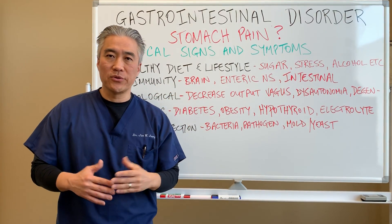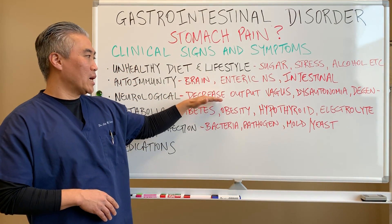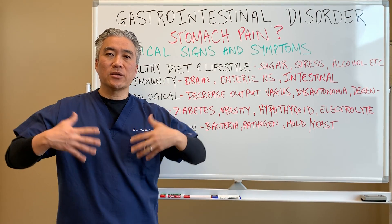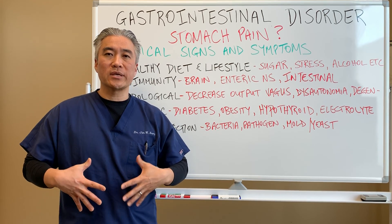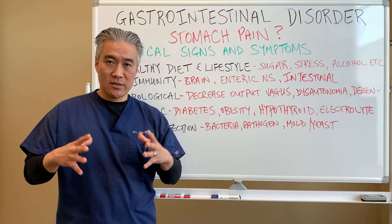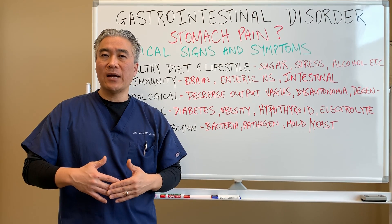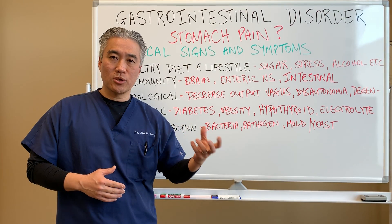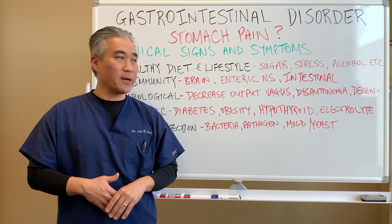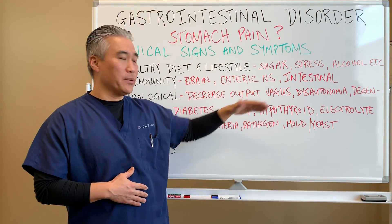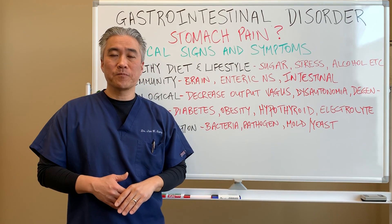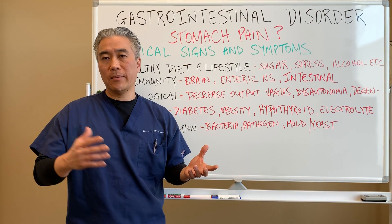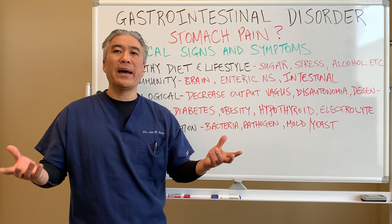We look at decreased output of the nervous system, most commonly what we call the vagus nerve — cranial nerve 10. Cranial nerve 10 goes down into the GI tract and innervates many of the organs, including the large intestine and small intestine. If your vagal function is not optimal, you may develop constipation or slow metabolism and absorption in the GI tract. We also look at dysautonomia or POTS, which can create imbalance between the parasympathetic and sympathetic systems.